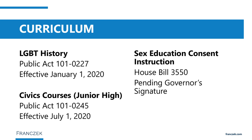Public Act 101-227 requires that textbooks purchased with funding from the State Board of Education not discriminate on the basis of any characteristics under the Illinois Human Rights Act, which protects against discrimination based on race, color, religion, sex, national origin, citizenship status, ancestry, age, physical or mental disability, arrest records, military status, and sexual orientation.